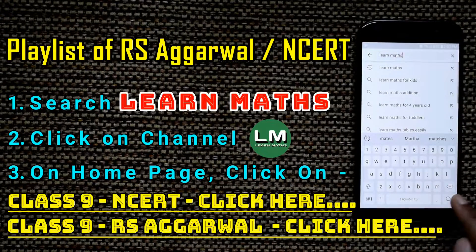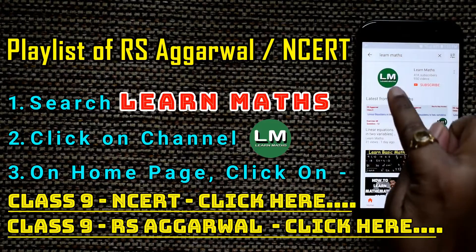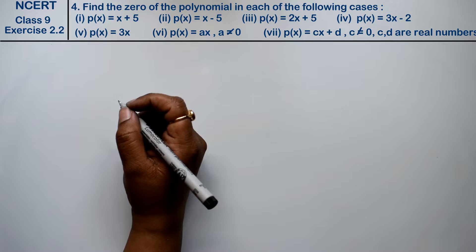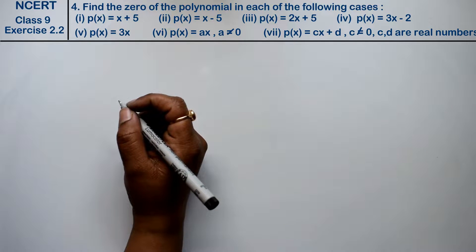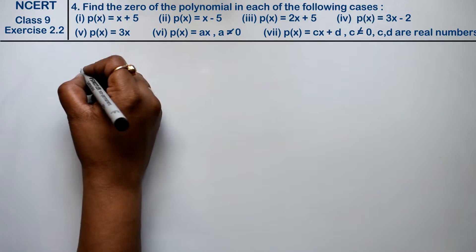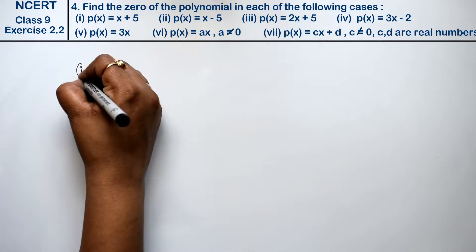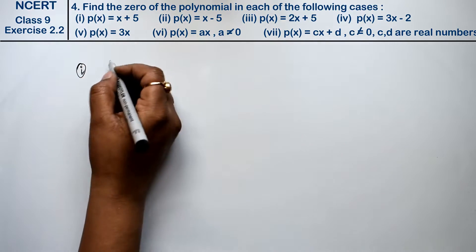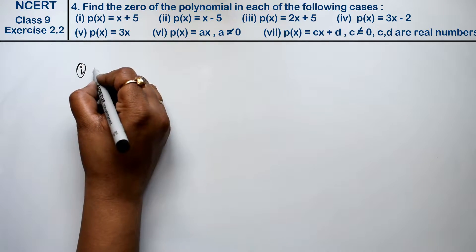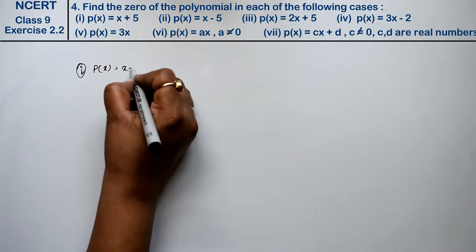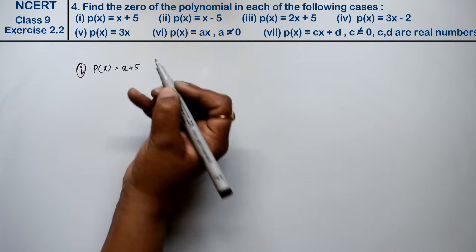Let's do question number 4 of exercise 2.2, that is polynomials. Question number 4 is: find the zeros of the polynomials in each of the following cases. First part — हमें zero of the polynomial निकालना है. p(x) equals to x plus 5 दे रखा है.